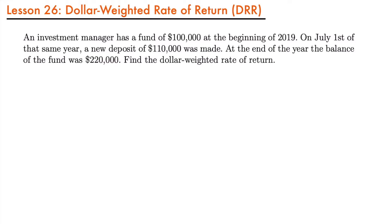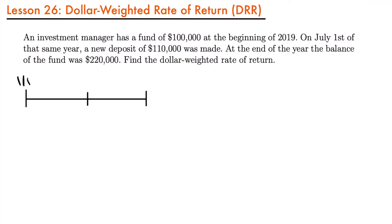We have three moments in time that we are interested in: the beginning of the year where we have the initial balance, July 1st where we have a deposit of $110,000, and the end of the year where we have a final balance of $220,000. So when we draw our timeline, we'll have three moments in time — January 1st, July 1st, and December 31st.